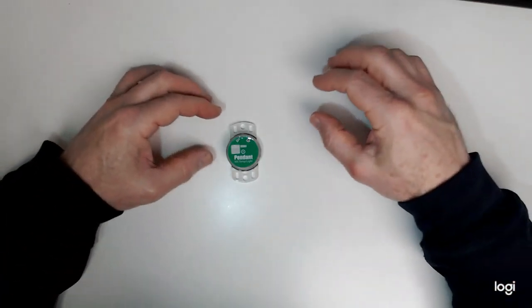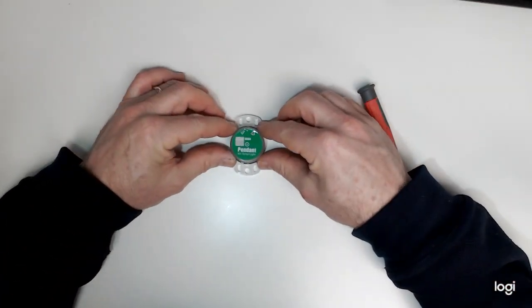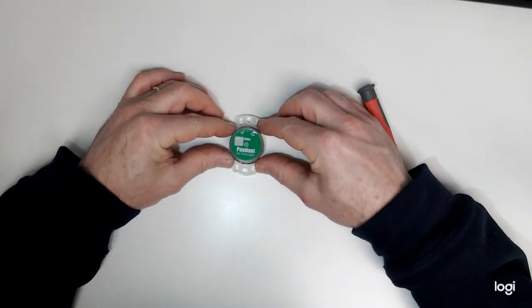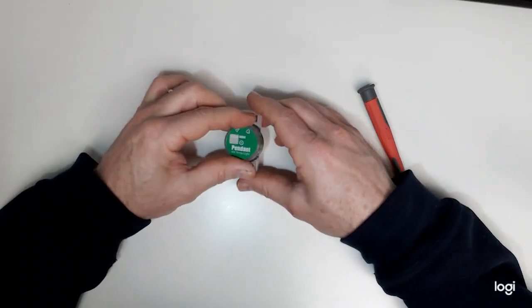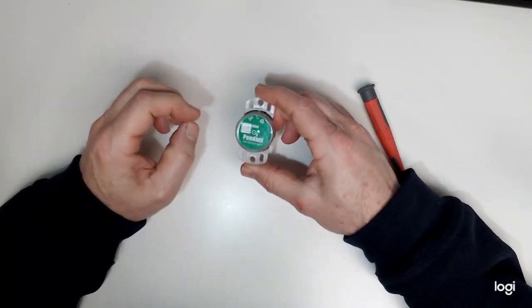This is a battery change on a Hobo MX pendant logger. The MX2201 and MX2202 are both identical - one has a green front, the other blue.